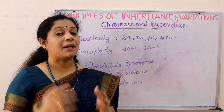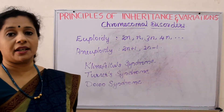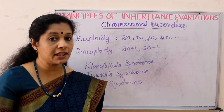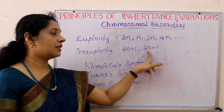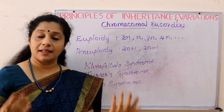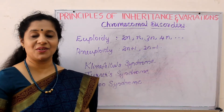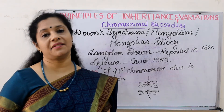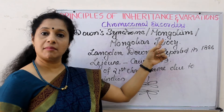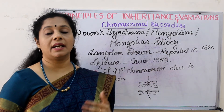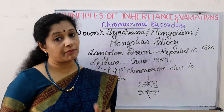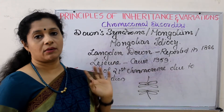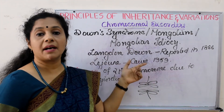That is called euploidy. But whatever we are learning in this chapter is all due to aneuploidy. Aneuploidy means there may be one more — we have a total of 46, there will be one chromosome extra, so the total number will be 47. The same way there can be one less. Now let us discuss them in detail. The first disease we are going to discuss is Down syndrome, otherwise called Mongolism or Mongolian idiocy. This is actually an autosomal abnormality — the autosomal chromosome has got an abnormality in number. This was first reported in 1866 by a scientist called Langdon Down, and that is why it is called Down syndrome.